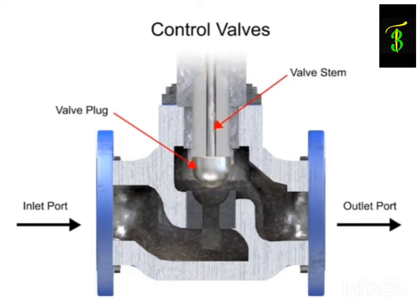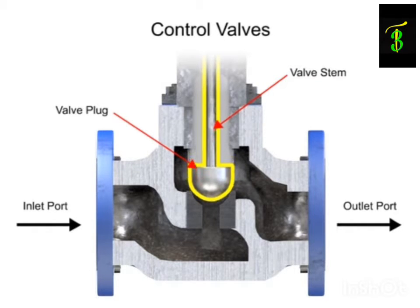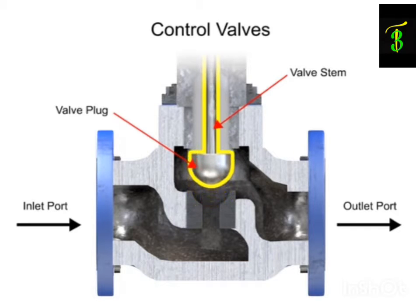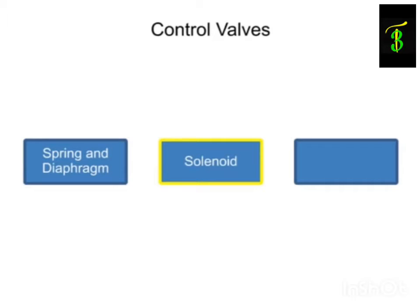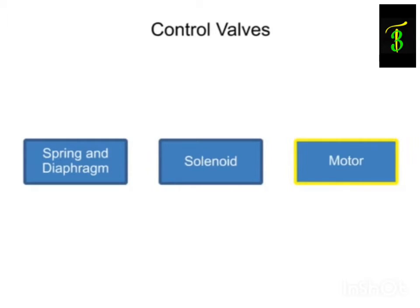The valve actuator is the component that physically moves the restrictor to vary the fluid flow. Three actuator types are used in control valves and they include spring and diaphragm, solenoid, and motor.